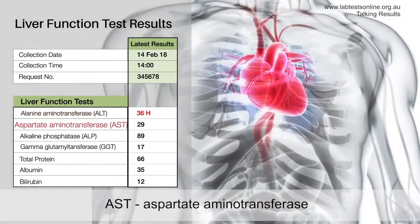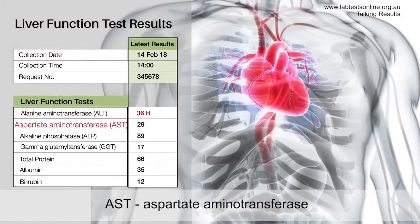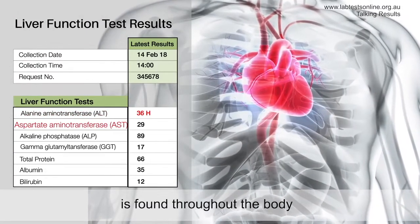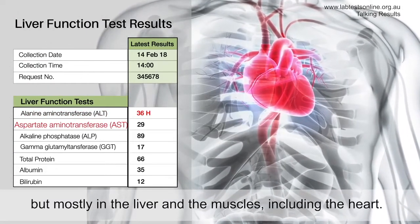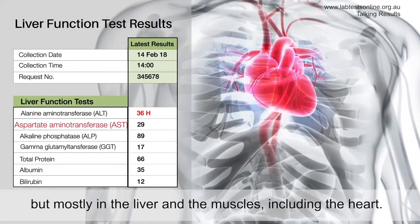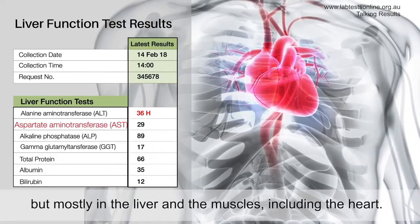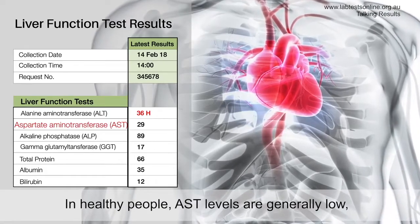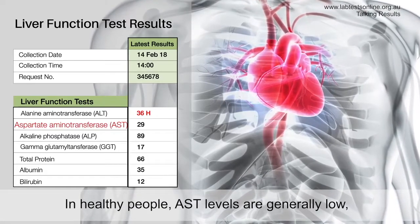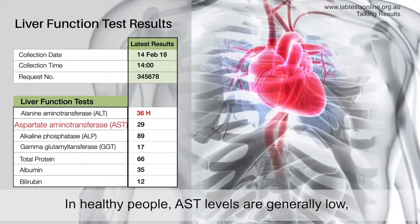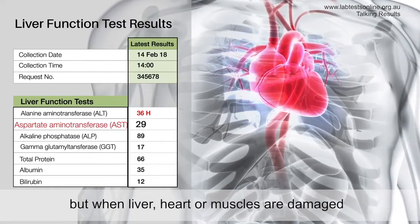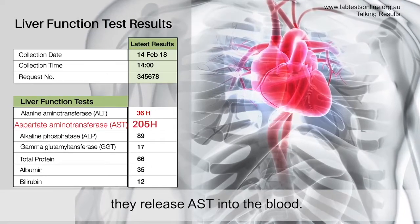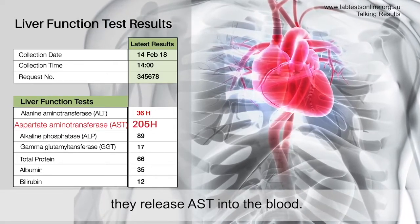AST, aspartate aminotransferase, is found throughout the body but mostly in the liver and the muscles, including the heart. In healthy people AST levels are generally low, but when the liver, heart, or muscles are damaged, they release AST into the blood.